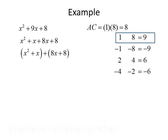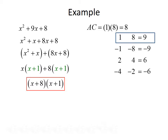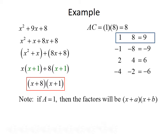Now we factor by grouping. We group x squared plus x and 8x plus 8. From the first group we factor out x, giving x times x plus 1. From the second group we factor out 8, giving 8 times x plus 1. The common term x plus 1 can be factored out, giving us x plus 8 times x plus 1. Note that when the leading coefficient A equals 1, the factors will always be of the form x plus little-a times x plus little-b.